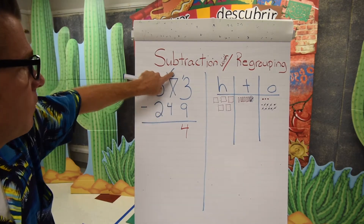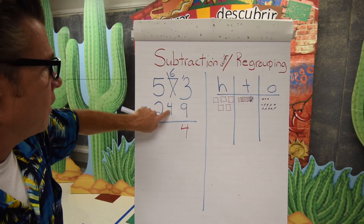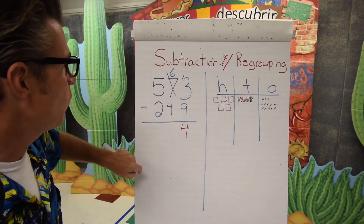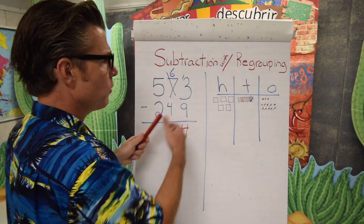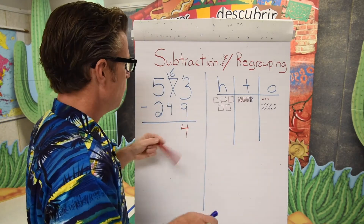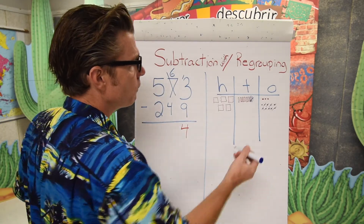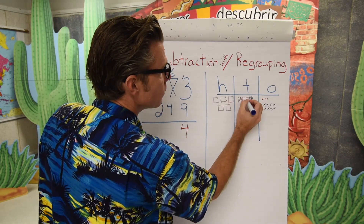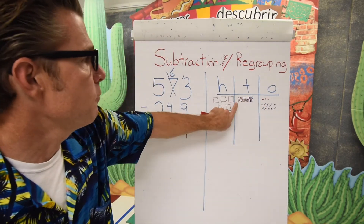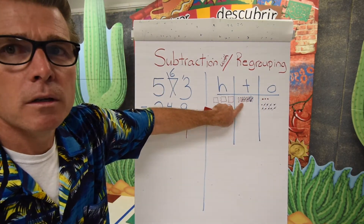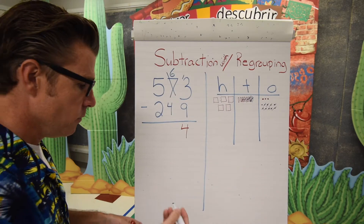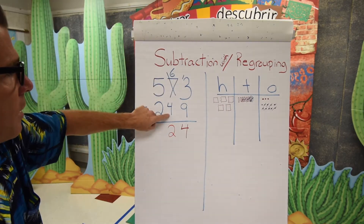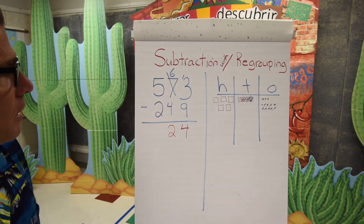Six and four — I have enough. If I'm taking four away from six that will work, so I remove four from the tens spot, and that leaves me with two tens. Six minus four is two.